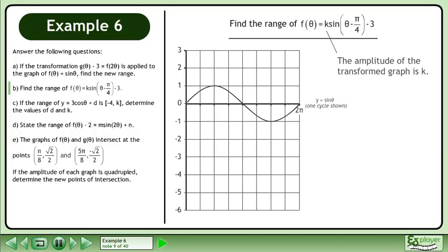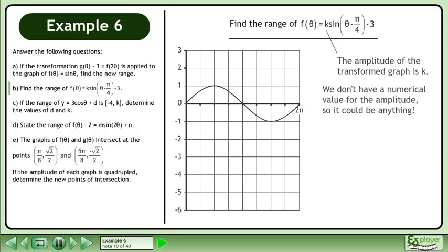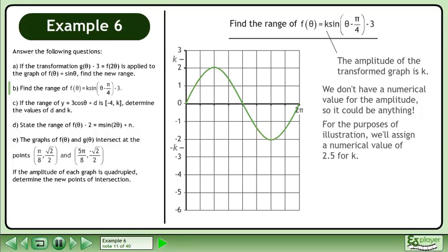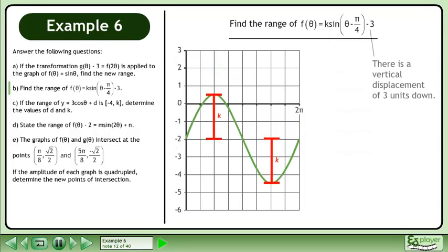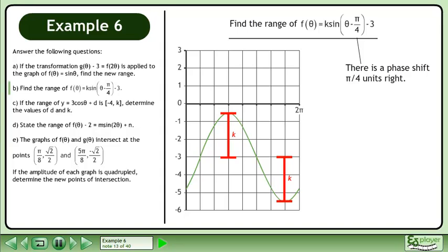The amplitude of the transformed graph is k. We don't have a numerical value for the amplitude, so it could be anything. For the purposes of illustration, we'll assign a numerical value of 2.5 for k. There is a vertical displacement of 3 units down. There is a phase shift pi over 4 units right. Note that the phase shift has no impact on the range of the graph.